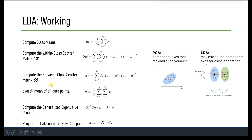For SB, the between-class scatter matrix, it measures the scatter between class means. The overall mean mu represents the mean of all data points across the entire dataset.